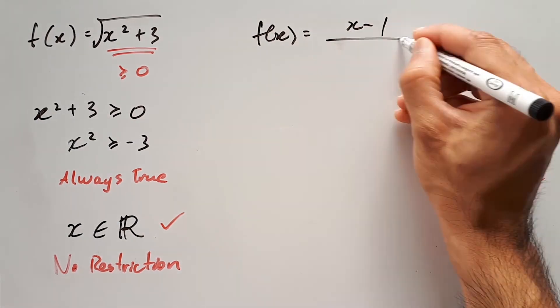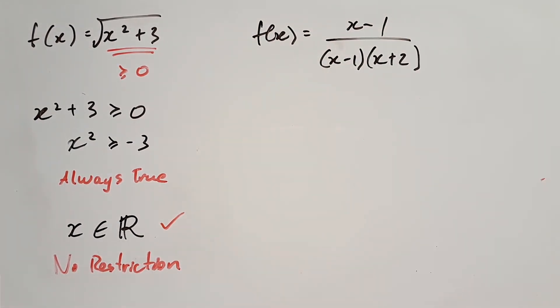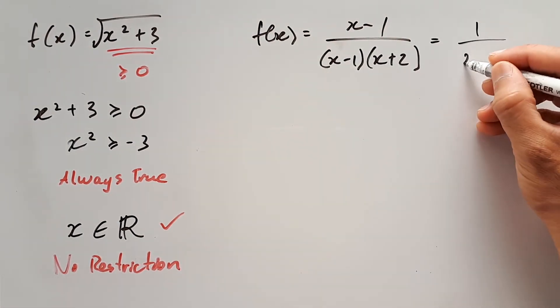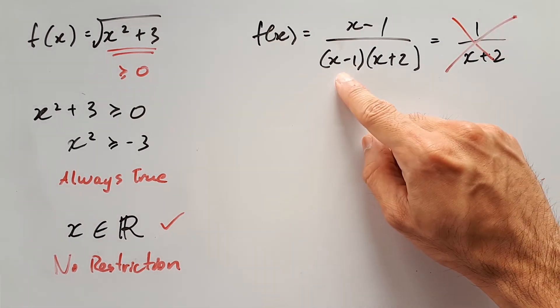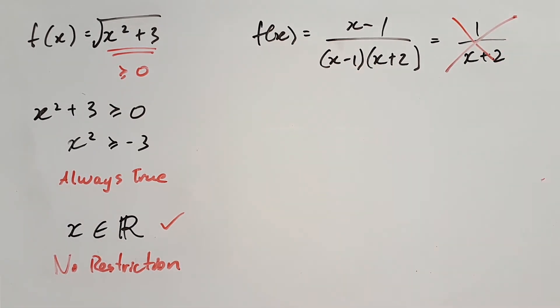Now for the third and final question, when given something like this, many students will try to simplify it as 1 over x plus 2, but that would be wrong, because x minus 1 in the denominator is creating some sort of restriction, and we're not allowed to remove that.